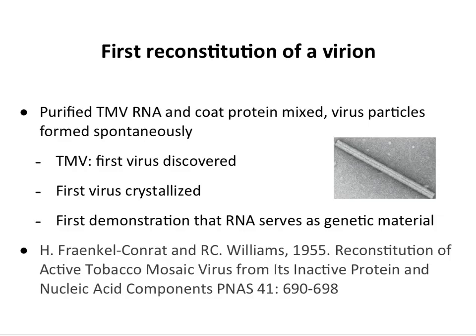The first time a virus was reconstituted in vitro — outside of a cell — was in 1955 with tobacco mosaic virus. They took virus particles, dissociated the RNA from the protein, made purified RNA and purified protein, and then mixed them back together. They spontaneously formed infectious virus particles, which could be put on plant leaves to initiate infection. This was important for two reasons: the assembly is a self-encoded process — all the information is in the protein and the RNA — and it was also the first demonstration that RNA could serve as genetic material.